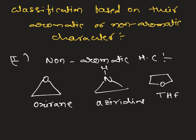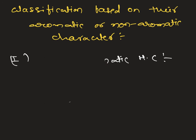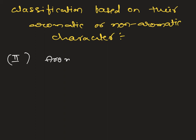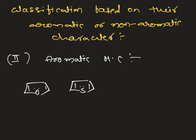Aromatic heterocyclic compounds are those where the heteroatom is present in the aromatic ring skeleton. Examples include furan, thiophene, pyrrole, and pyridine — all these compounds are aromatic in nature, so we call them aromatic heterocyclic compounds. This concludes the classification of heterocyclic compounds. In the next class, we will discuss the aromaticity of these heterocyclic compounds.